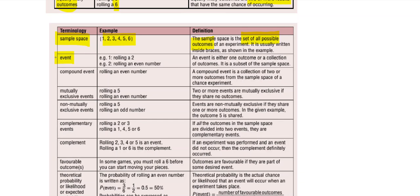An event is either one outcome or a collection of outcomes — it is a subset of the sample space. It could be rolling a two, which is one event, or rolling an even number, which could be a two, four, or six — three different outcomes fitting that criteria. A compound event is a collection of two or more outcomes from the sample space, like rolling an even number.